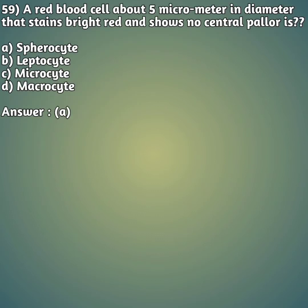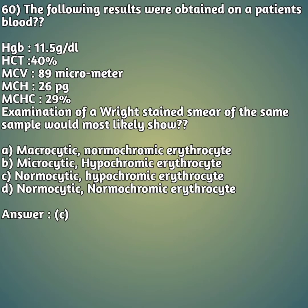Moving on to our 59th question: a red blood cell about 5 micrometers in diameter that stains bright red and shows no central pallor is a - option A: spherocyte. Option B: leptocyte. Option C: microcyte. Option D: macrocyte. The right answer is answer A - spherocyte.